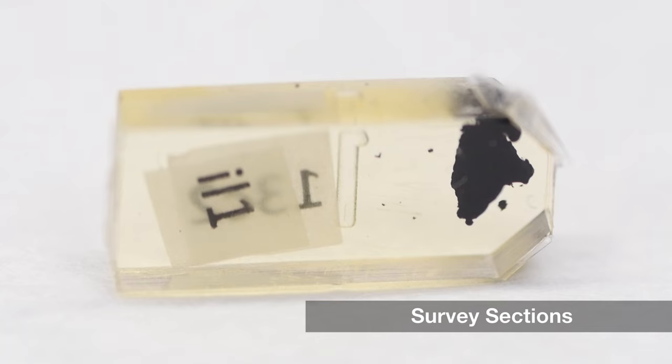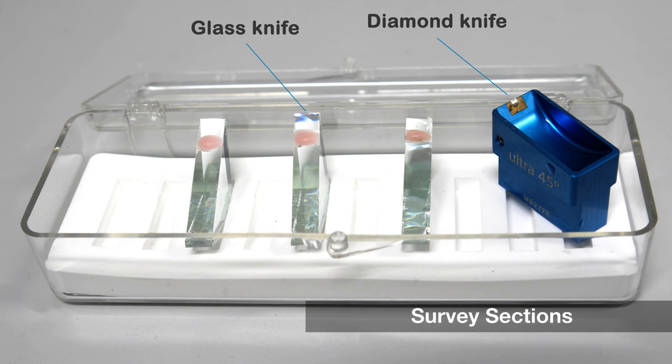Since the resin is very hard, sections can only be cut using glass or diamond knives. A glass knife is made from a strip of glass.